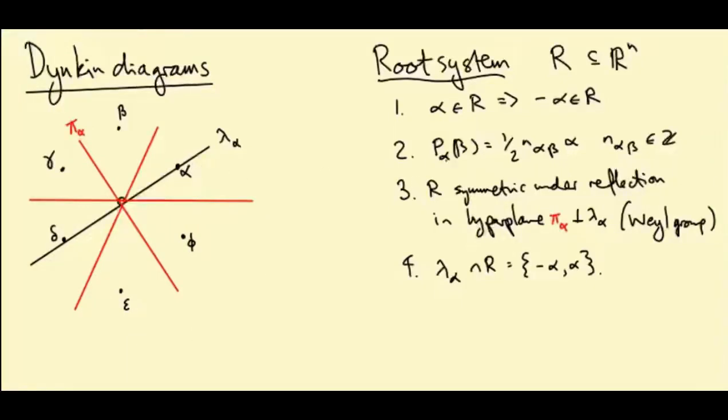Second, if I take two roots, alpha and beta, and I project beta orthogonally onto the line through alpha, like this...